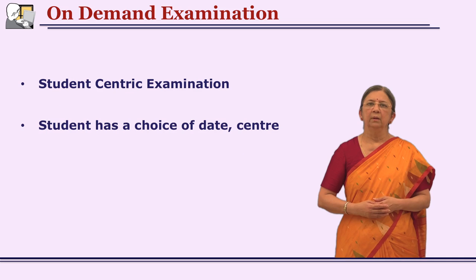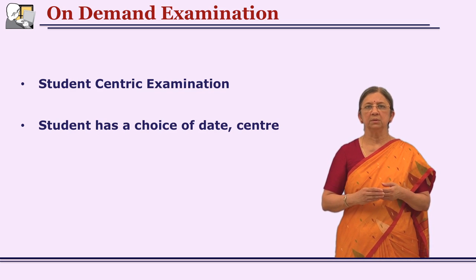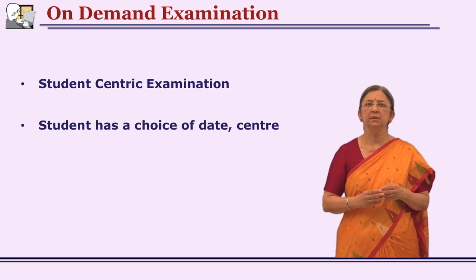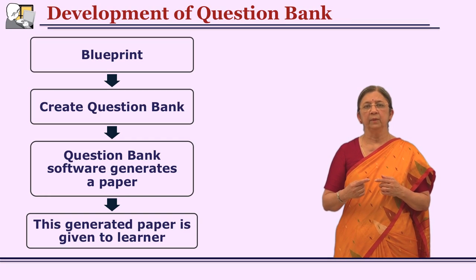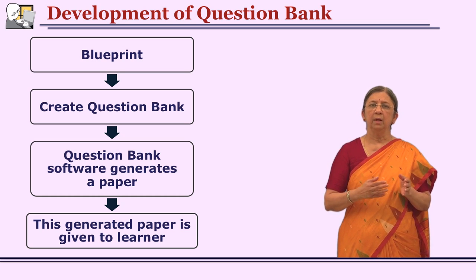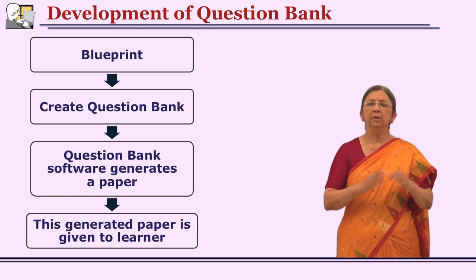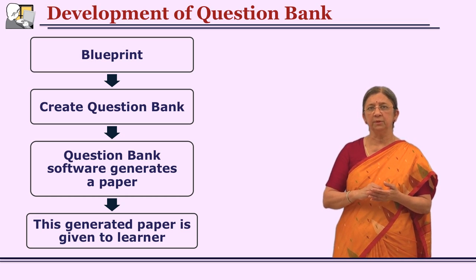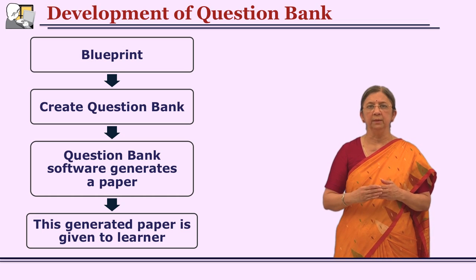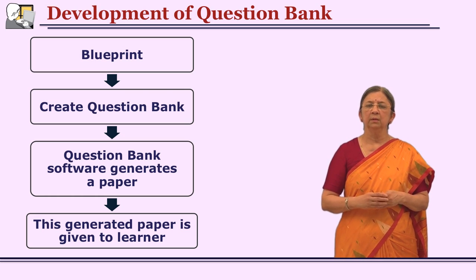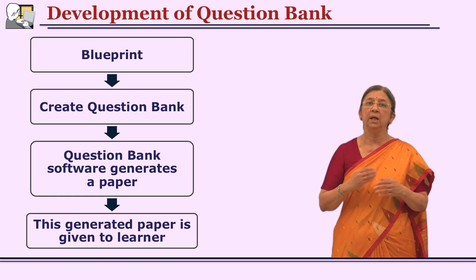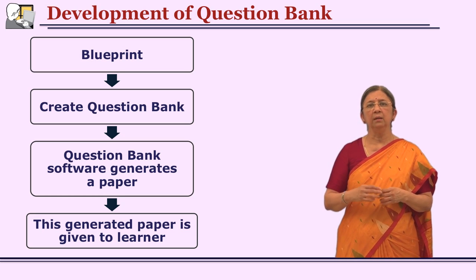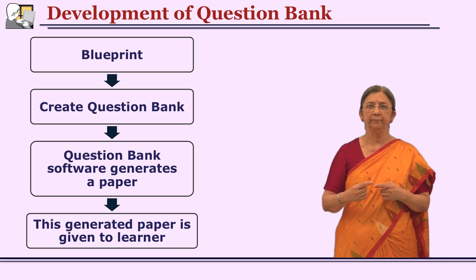On-demand examinations are used for students who demand that after completing 90 days of studying, they be evaluated. They can be given an examination center where a paper can be generated. If you have a question bank ready for a particular course of 4 credits, questions are already framed on the content using different objectives and types. If you have a blueprint specifying how many questions, what types, and how many marks, that blueprint is given to the question bank software, which generates a new question paper on the spot.